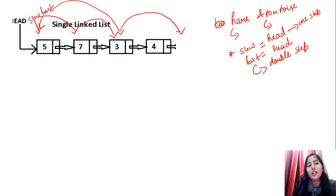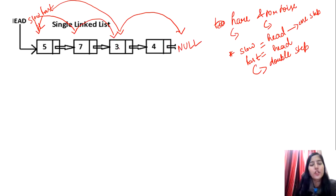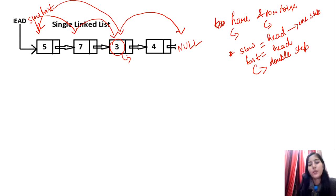Fast moves by double step, so now it points to null. When we check the condition — fast is not equal to null — the condition is false. So the loop terminates. Slow is pointing to node 3, which is the correct answer — the middle node. This is the hare and tortoise approach.